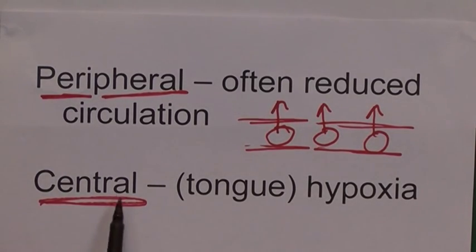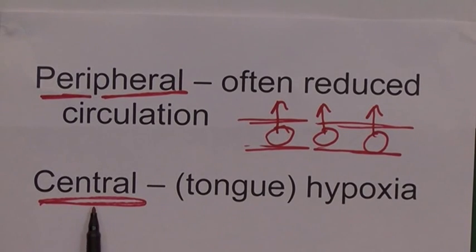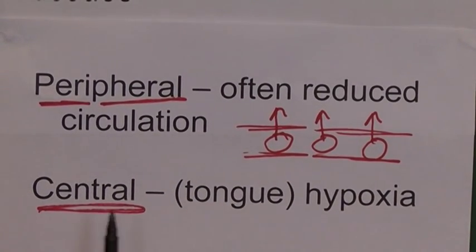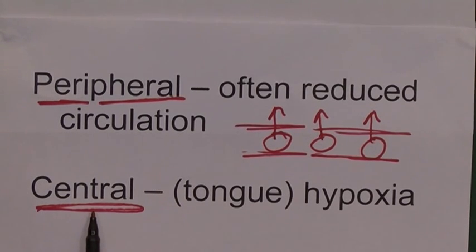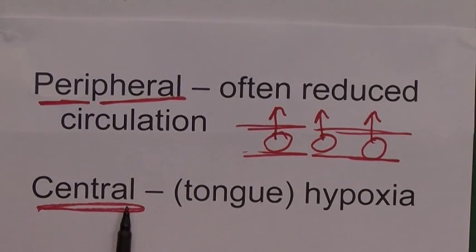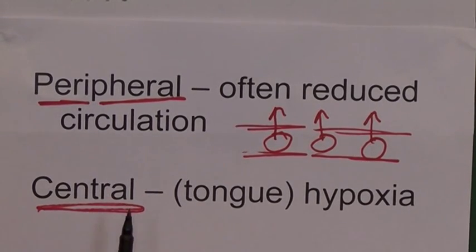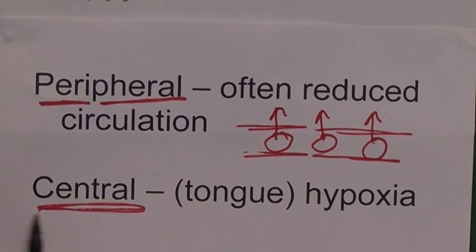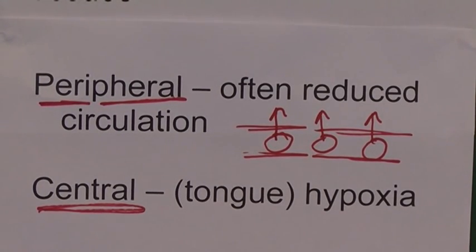Central cyanosis is a much more serious clinical feature and indicates acute hypoxaemia. In white people it can be seen in the neck and chest; in anyone, it's visible in the lips and tongue. The tongue is a very good indicator — ask the patient to stick their tongue out and look at its colour. If the tongue is cyanosed, that is central cyanosis, meaning the patient is definitely acutely hypoxaemic and needs immediate intervention.